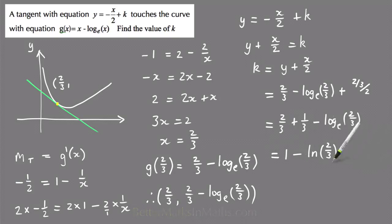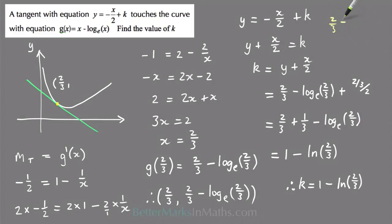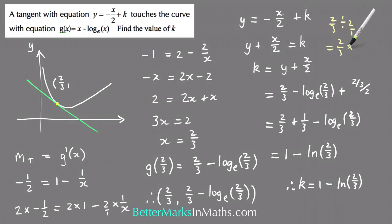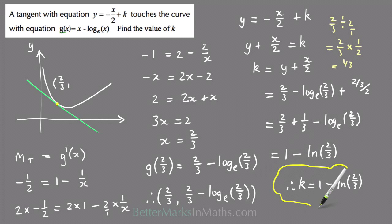That simplifies to k equals 1 minus ln of 2 thirds. The step for 2 thirds divided by 2: 2 thirds times 1 on 2 gives 2 on 6, which cancels to 1 third. So the answer to the question is k equals 1 minus ln of 2 thirds.